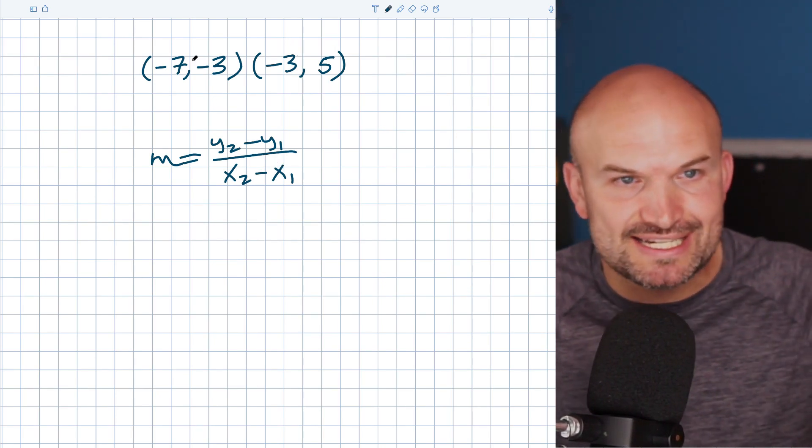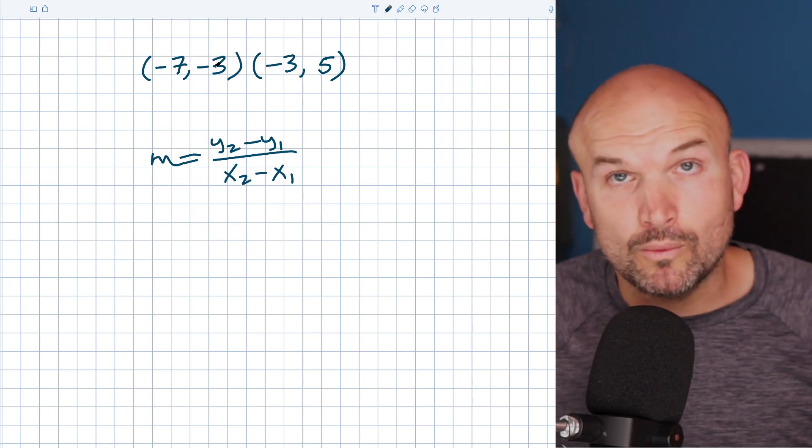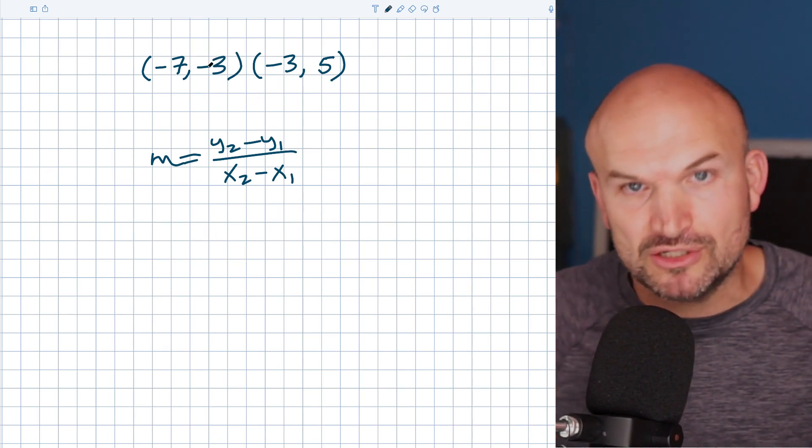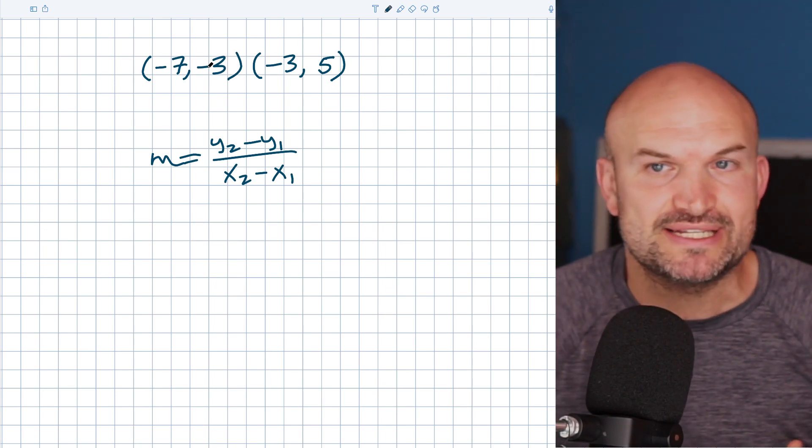The problem is though, when you have X coordinates or Y coordinates that are negative, you're adding more and more negatives to the problem. And when we have multiple negatives, that's where students make the mistakes.